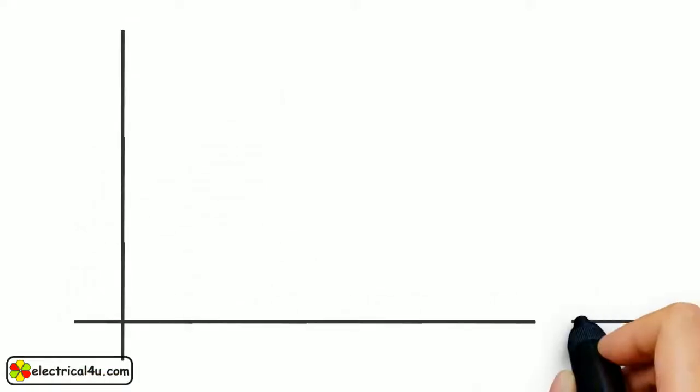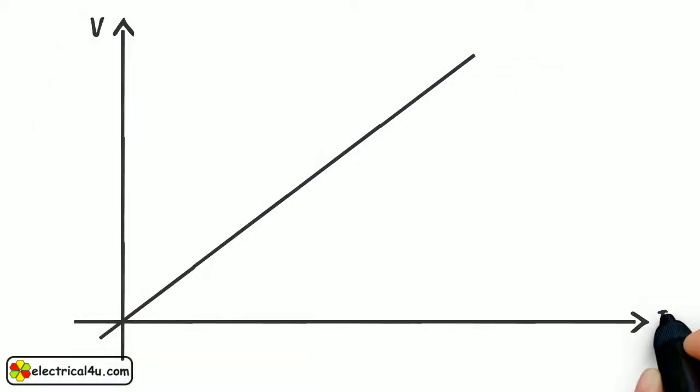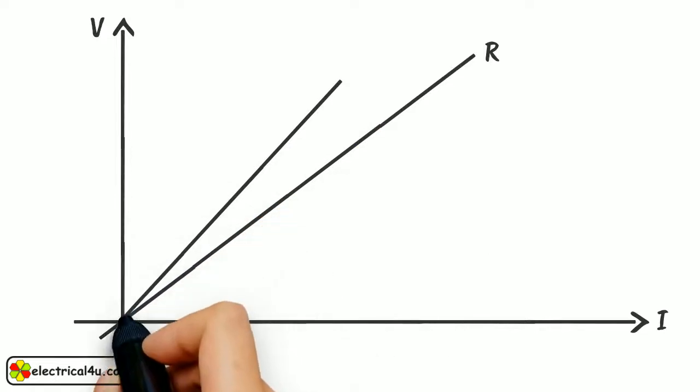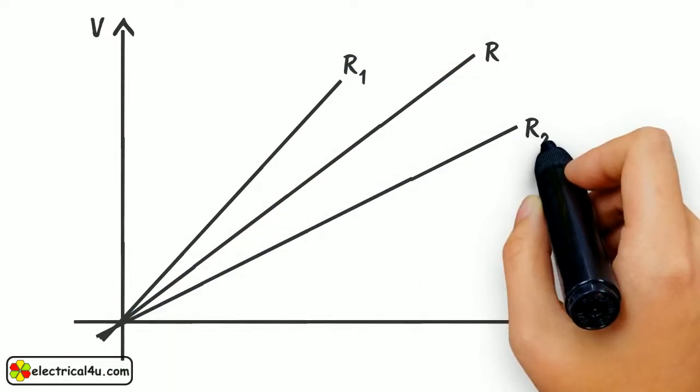Ohm's law is expressed graphically on V and I axes as a straight line passing through the origin, as shown in the figure. The relationship between V and I have been shown for different values of R in the figure.